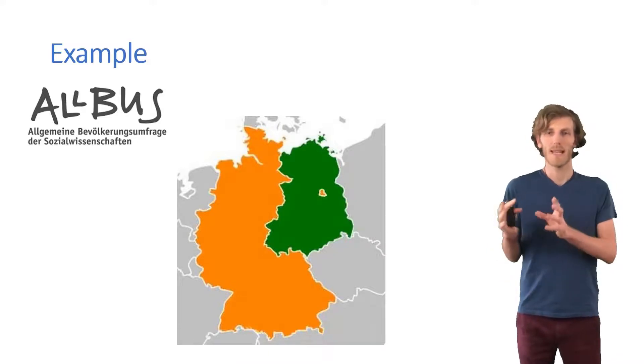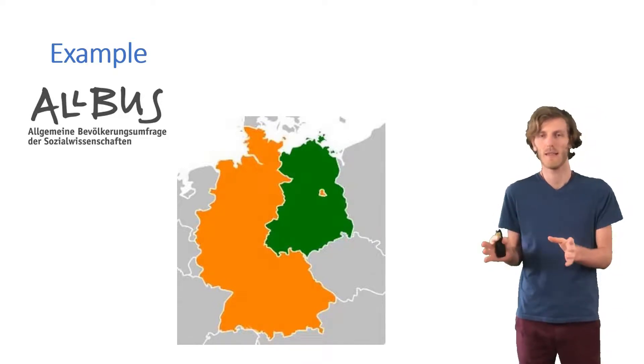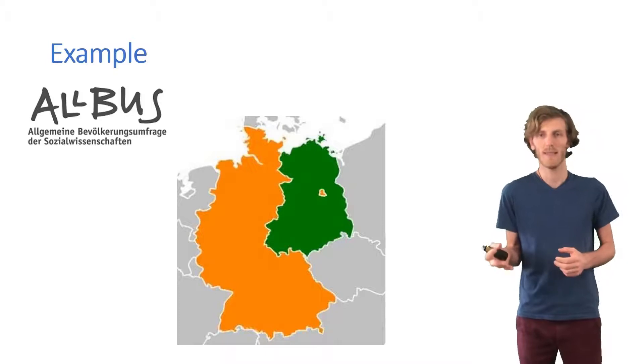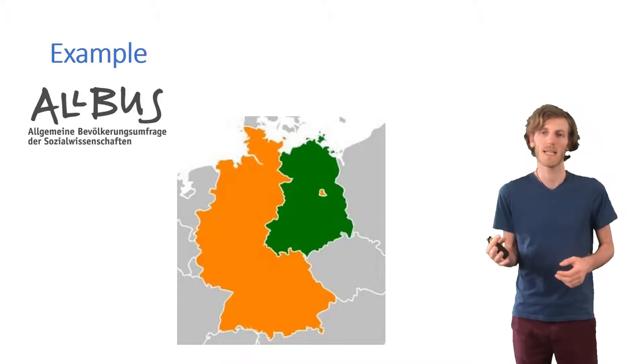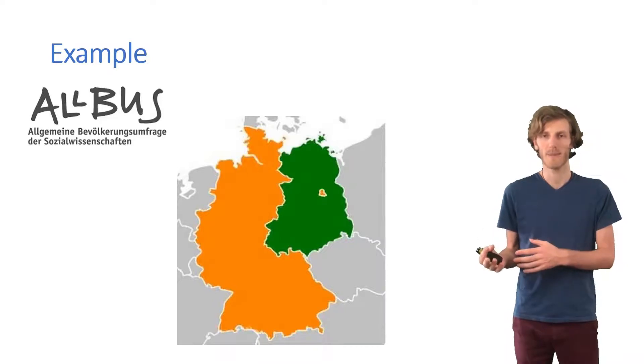So if you just sample randomly across all of Germany, you won't get that many East Germans. So it would be difficult to make precise estimates about any constructs for East Germany alone. So what ALBUS does is they oversample respondents from the East. They take about twice as many respondents from the East as you would find in a random sample.